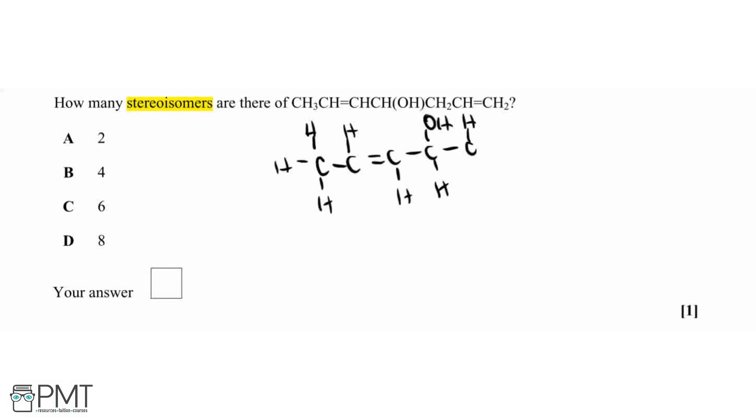Optical isomers occur when there's a chiral carbon centre, and a chiral carbon centre is one where you've got four different groups attached to a carbon overall.